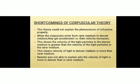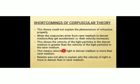What are the shortcomings of the corpuscular theory? This theory could not explain the phenomenon of refraction properly. When the corpuscles move from a rarer medium to a denser medium, they get accelerated and their velocity increases. This means the velocity of light particles in the denser medium would be greater than in the rarer medium — but this is wrong. The velocity of light in a denser medium is actually less than in a rarer medium. So Newton was not able to explain why the velocity of light is less in a denser medium.